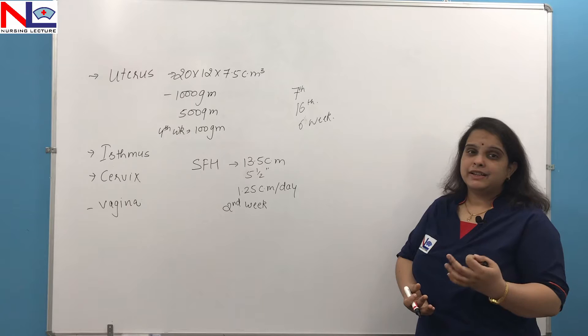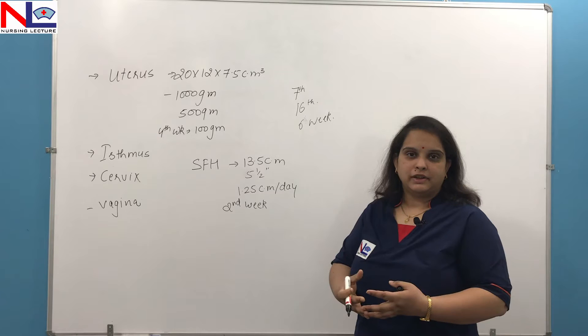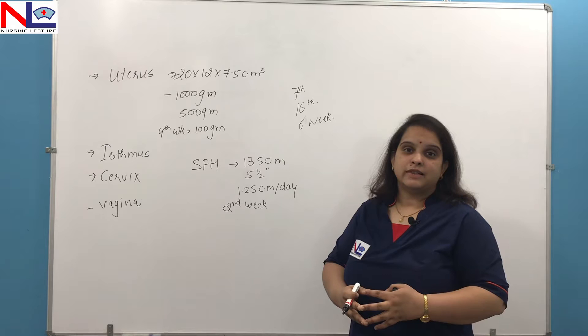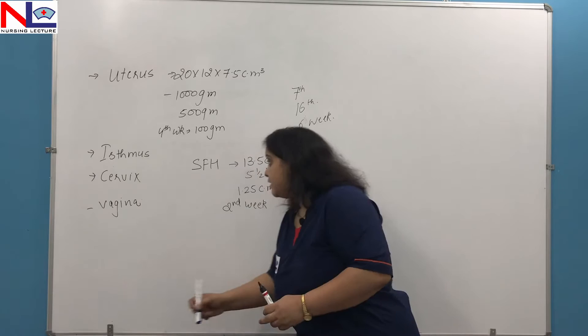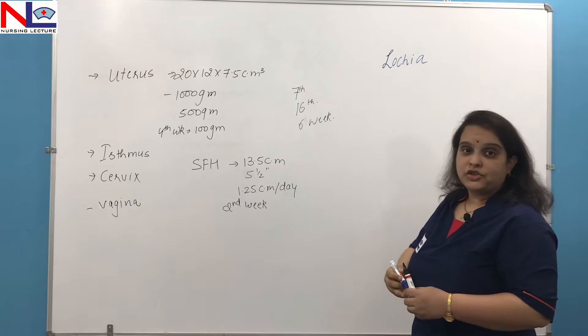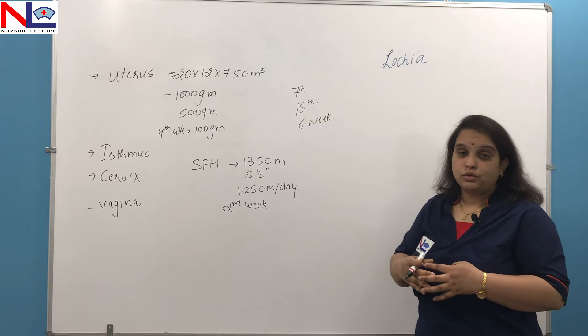Along with that, there is contraction of blood vessels — they get thrombosed and undergo hyaline degeneration, and from there new vessels grow up. When the regeneration of new endometrial lining is ongoing, there is a shedding of decidual lining — necrotic cells mixed with RBCs, WBCs, shreds of fetal membrane — and this mixture comes out from the uterine body through the vaginal route. This vaginal discharge is called lochia, and it lasts for about two weeks — that is the first fortnight, or 14 days.